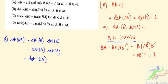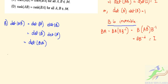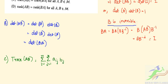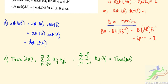Option C: trace(AB) equals the summation over i from 1 to n of the summation over j from 1 to n of A(i,j) × B(j,i), which can be rewritten as the summation over j from 1 to n of the summation over i from 1 to n of B(j,i) × A(i,j), which is nothing but trace(BA). So option C is also correct.